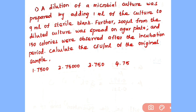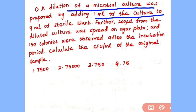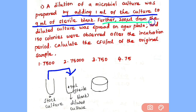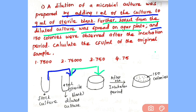The problem is: a dilution of a microbial culture was prepared by adding 1 ml of the culture to 9 ml of sterile blank. Further, 200 microlitres from the diluted culture was spread on an agar plate. And 150 colonies were observed after the incubation period.